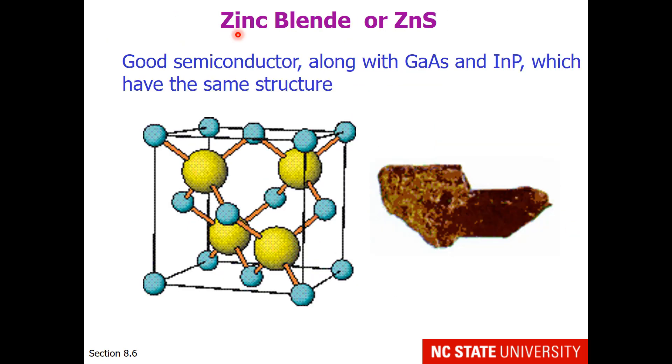Here is another network covalent solid. Your instinct is to believe that zinc sulfide is an ionic compound. However, it's not. It has a three-dimensional structure that is full of this repeat pattern. Zinc sulfide is found in different rock formations, and it's a good semiconductor. This is along with gallium arsenide or indium phosphide, which have similar structures.